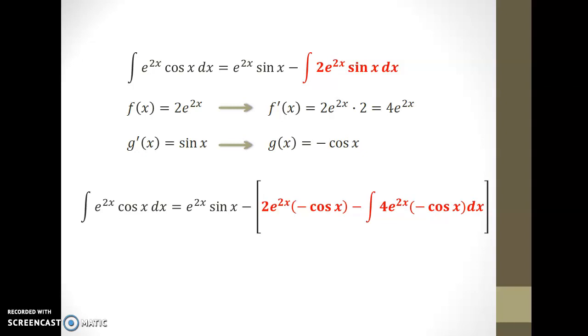Now, before signs start getting out of hand, I've chosen to distribute them to the two terms within the brackets. In the last row, we noticed that a new integral has appeared once again. We're integrating 4e to the 2x and cos x.